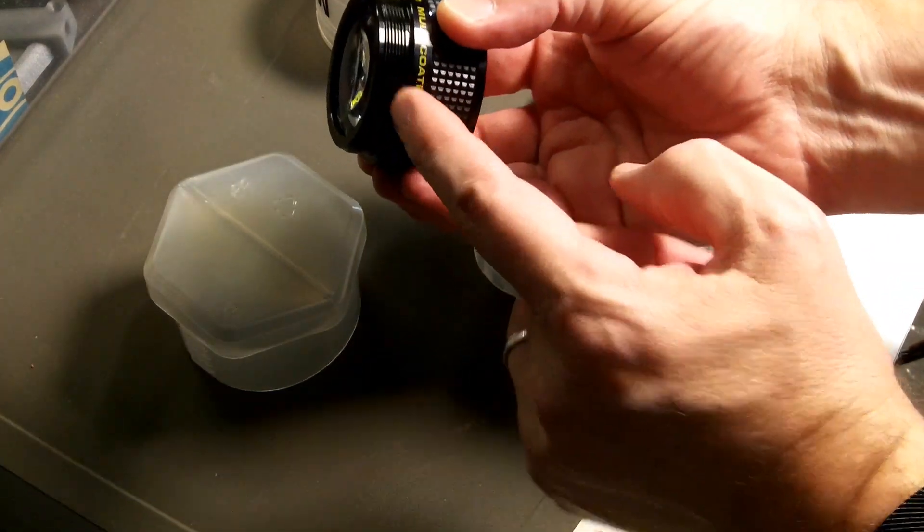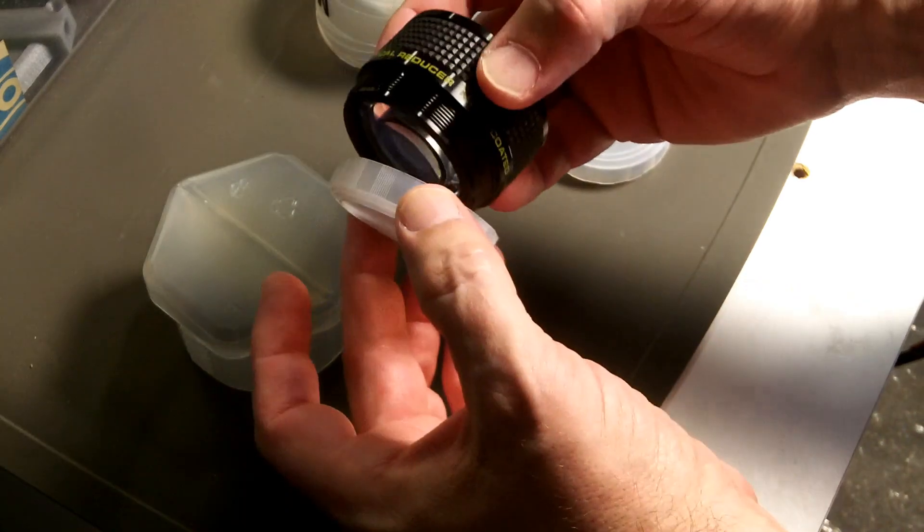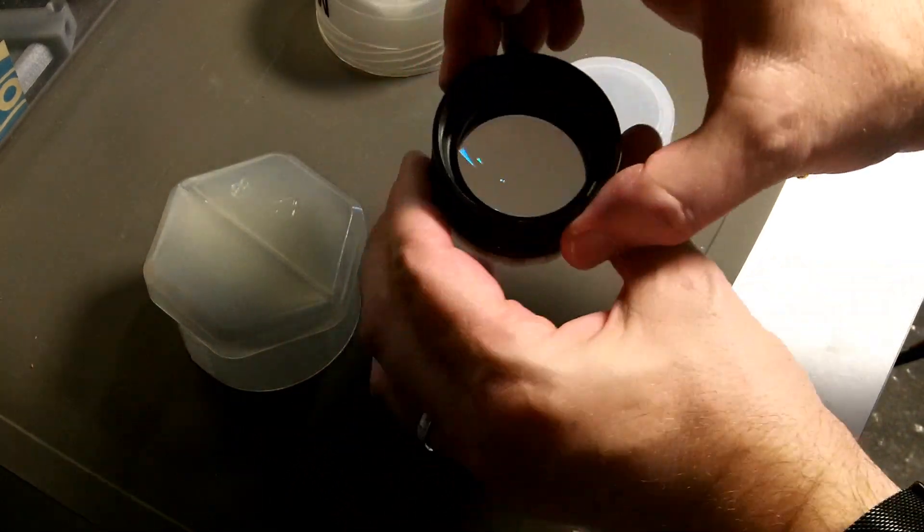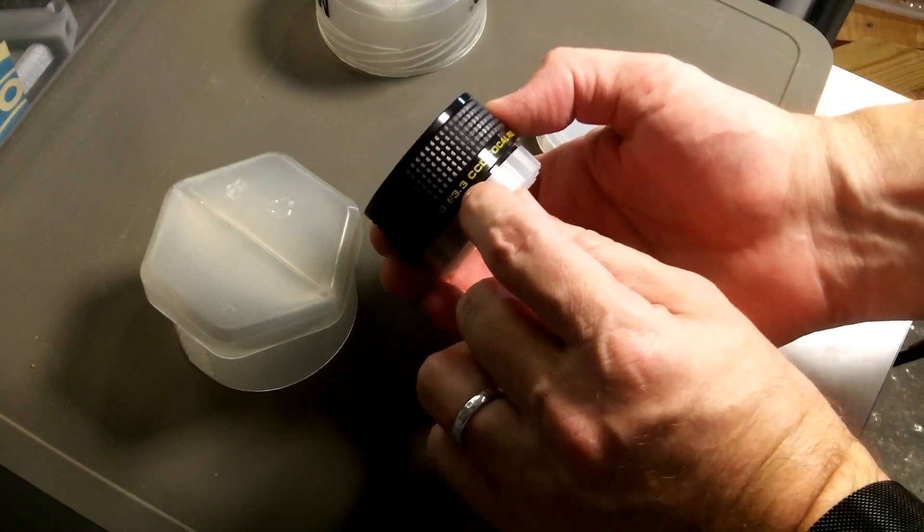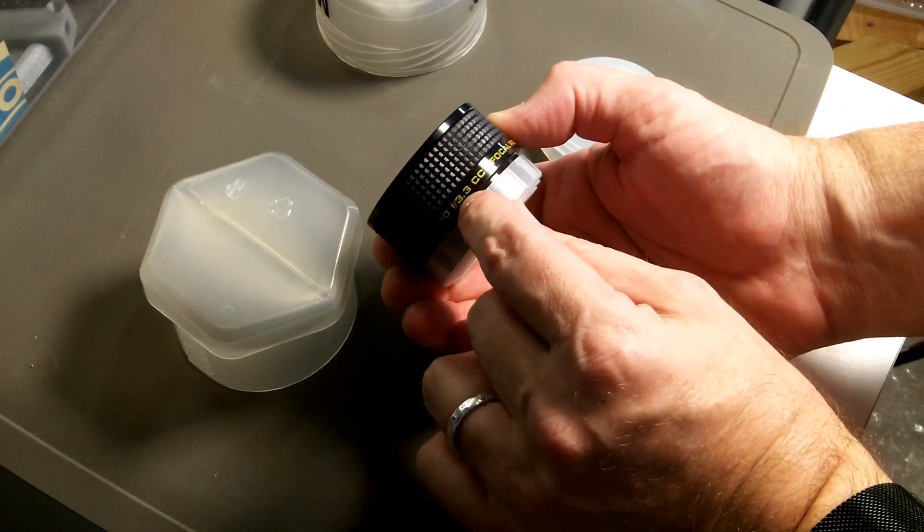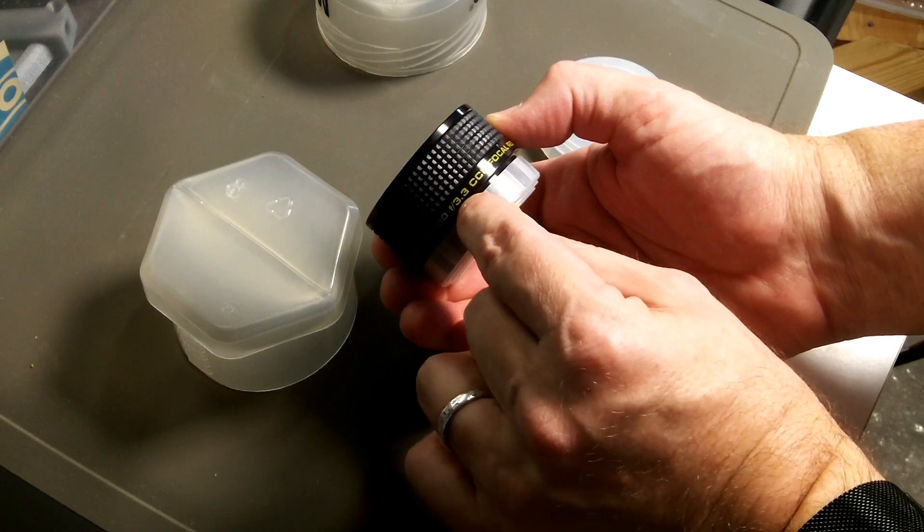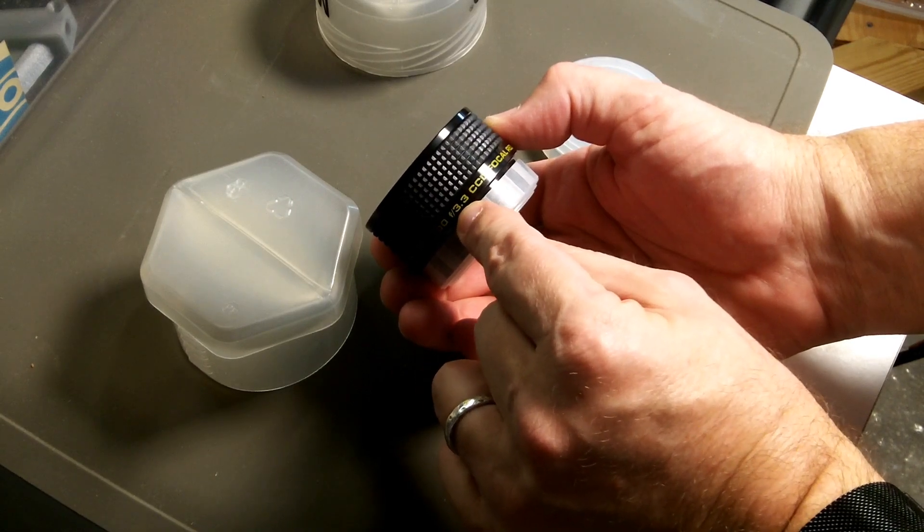You screw it into the SCT threads on the back of a Meade or any other SCT telescope, and it will reduce the Meade's normal F10 focal ratio down to F3.3. So it more than doubles the field of view and the amount of light that's coming in.